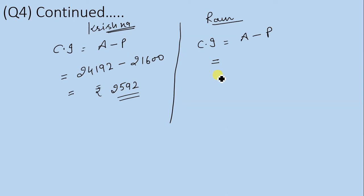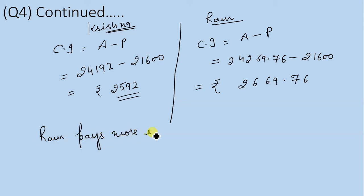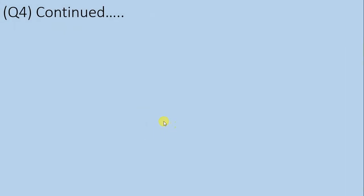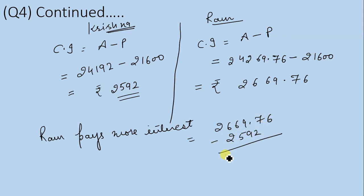For Ram: CI = 24,269.76 minus 21,600, which gives ₹2,669.76. Ram pays more interest. The difference is 2,669.76 minus 2,592, which equals ₹77.76. So Ram pays ₹77.76 more interest than Krishna.